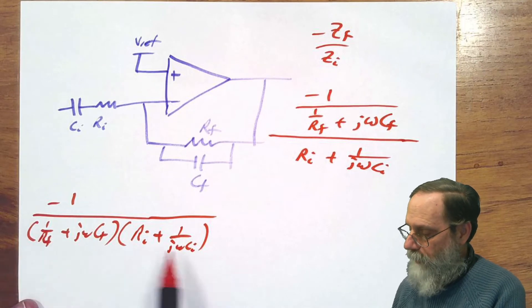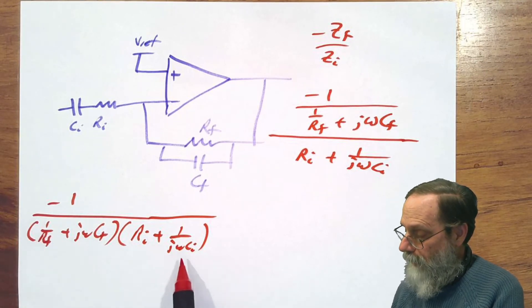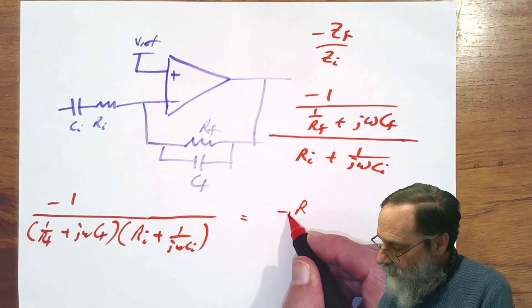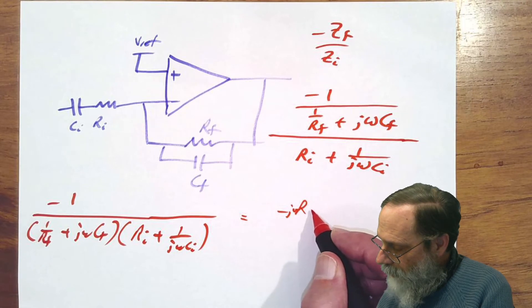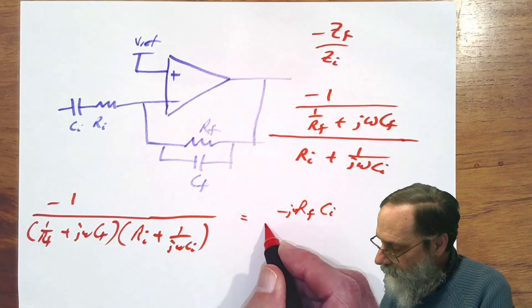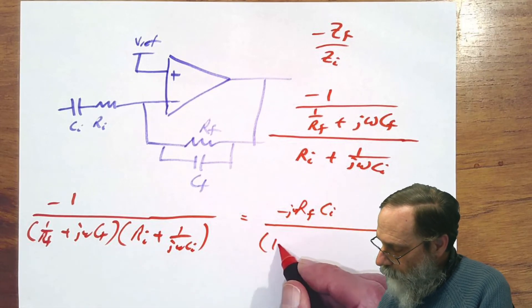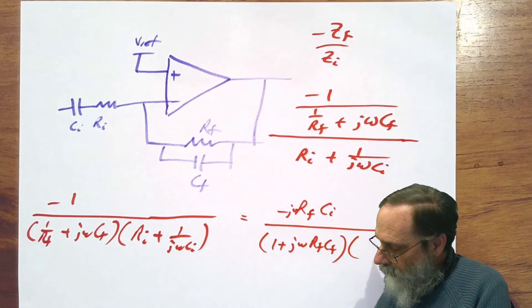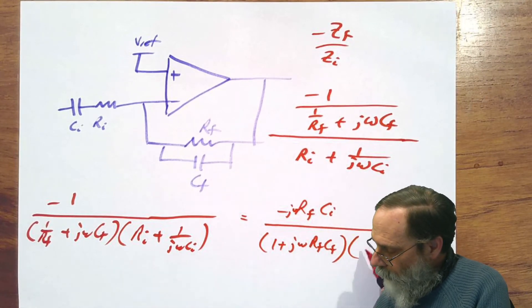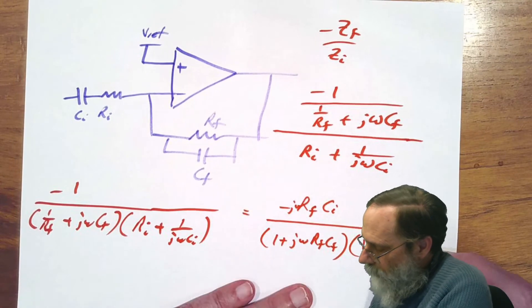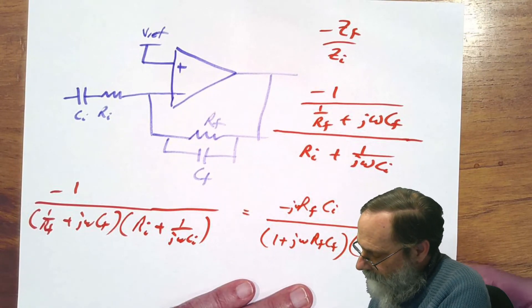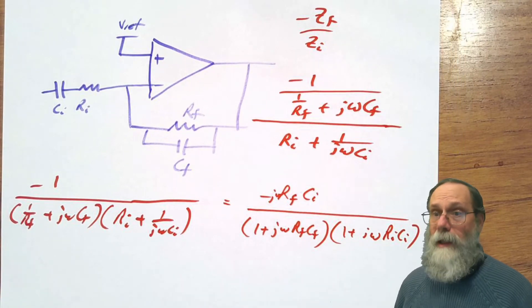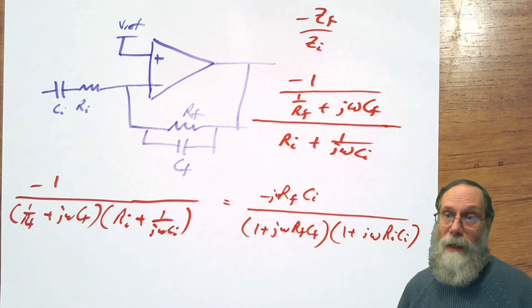We could simplify this thing if we multiply top and bottom by Rf and by j omega Ci. So that's minus j omega Rf Ci over 1 plus j omega Rf Cf times Ri plus 1 over j omega Ci. That is the general form for the gain of this amplifier.